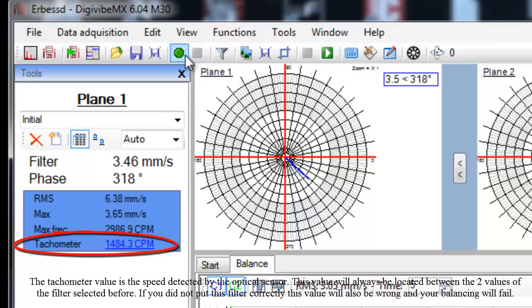The tachometer value is the speed detected by the optical sensor. This value will always be located between the two values of the filter selected before. If you did not put this filter correctly, this value will also be wrong and your balancing will fail.